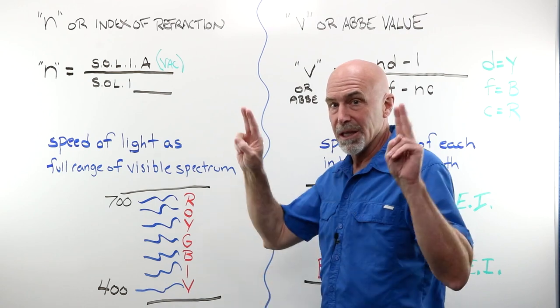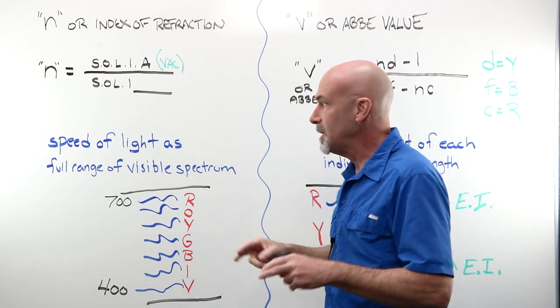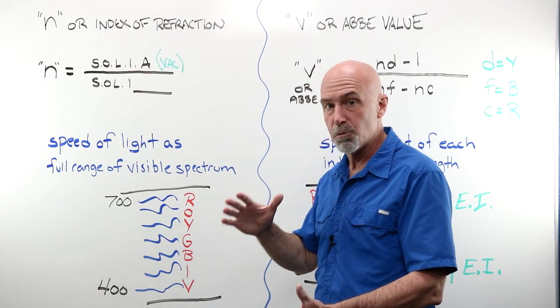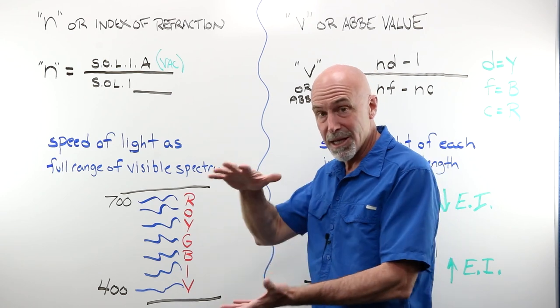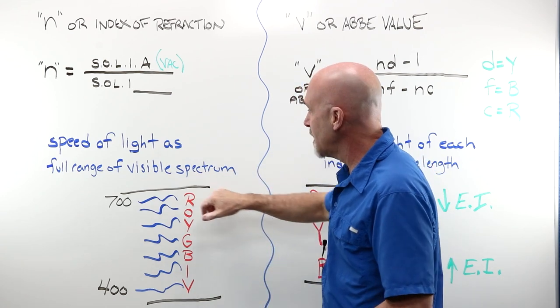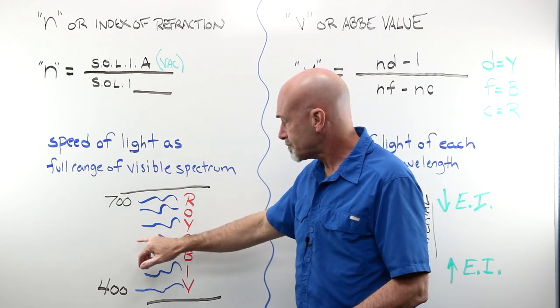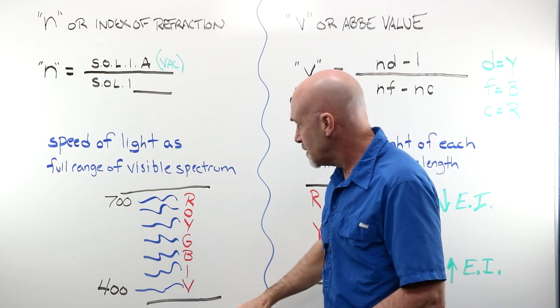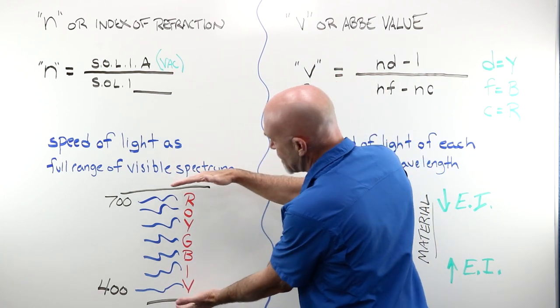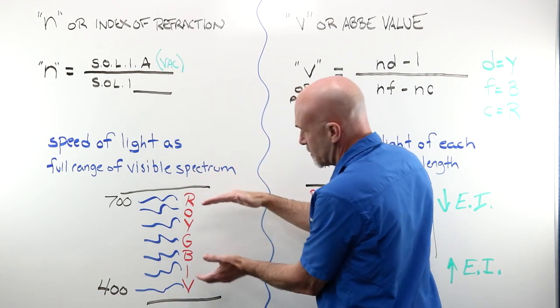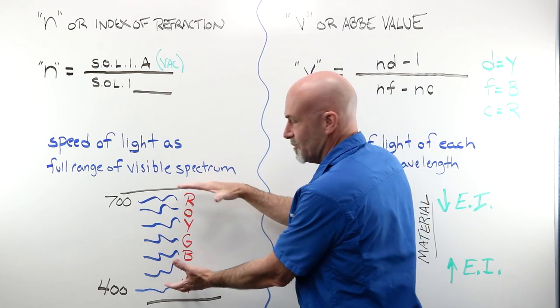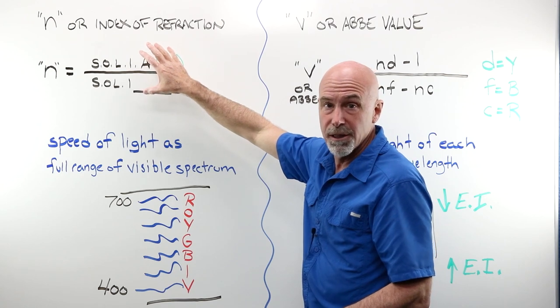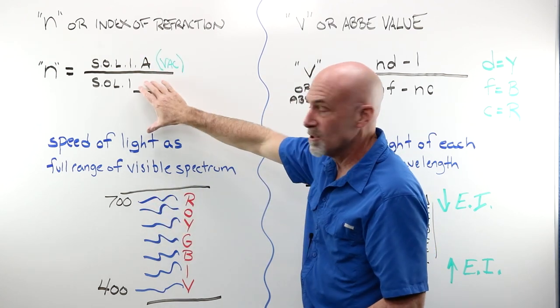The index of refraction is a way of expressing the relationship between the speed of light in air or a vacuum and the speed of light in any given material. When we say the speed of light or energy for the index of refraction, we're talking about the entire range. We picture it or model it as a bundle, one single ray of the visible spectrum.